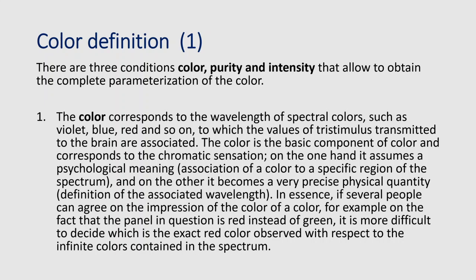The first parameter, color, corresponds to the wavelength of spectral colors such as violet, blue, red, and so on, to which the values of the tristimulus transmitted to the brain are associated. Color is the basic component and corresponds to the chromatic sensation. On one hand it assumes a physiological meaning — association of a color with a specific region of the spectrum — and on the other it becomes a precise physical quantity: the definition of the associated wavelength. If several people can agree on a color impression, for example that a panel is red rather than green, it is more difficult to decide which exact red it is with respect to the infinite colors contained in the spectrum.